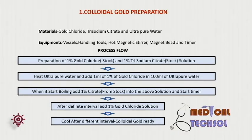Process: 1. Preparation of 1% gold chloride and 1% trisodium citrate stock — trisodium citrate solution prepared freshly. 2. Heat the ultrapure water in a glass vessel and add 1 ml of gold chloride from stock into 100 ml of ultrapure water. 3. When boiling starts, add 1% citrate from stock into the above solution and start the timer. 4. After a definite interval, add 1% gold chloride solution. 5. Cool the solution after a definite interval. Different colloidal gold nanoparticles — 20 nm, 40 nm, 60 nm — are synthesized by changing the gold chloride and citrate concentration ratio and time interval of the process.